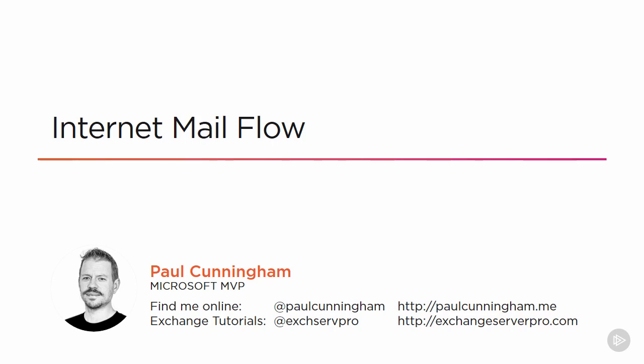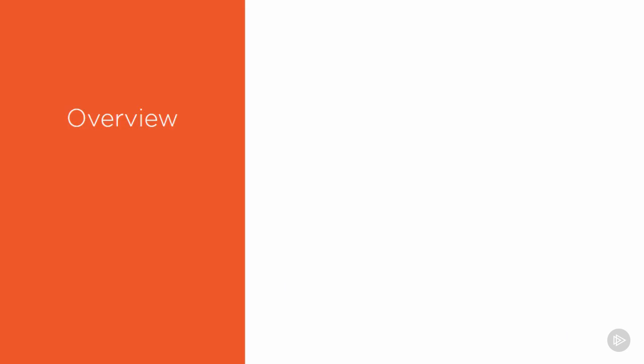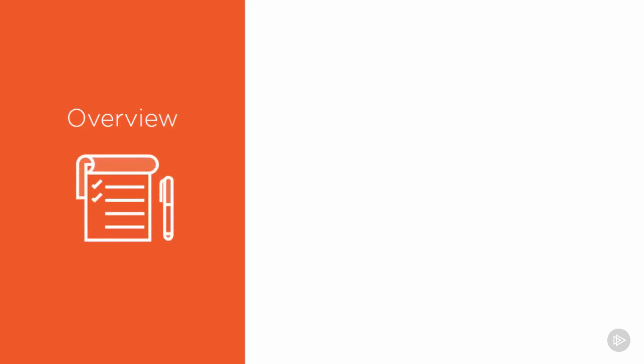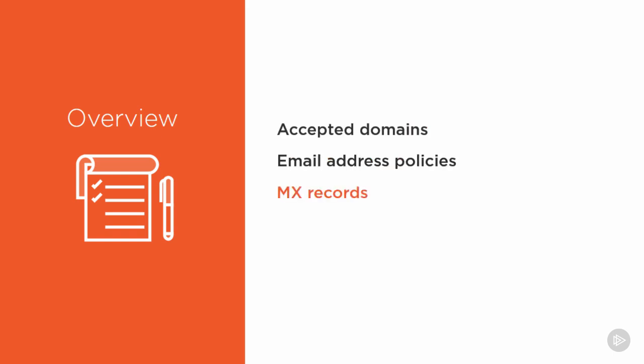Now that we've looked at how mail flow works within the organization, it's time to look at how to establish inbound and outbound email with the internet. In this module we're going to look at Accepted Domains, Email Address Policies, MX Records, and Send Connectors.